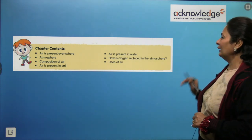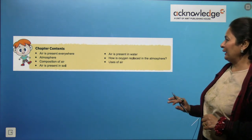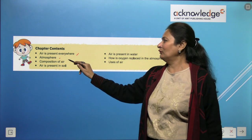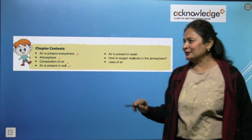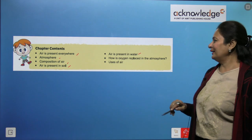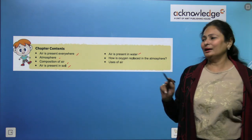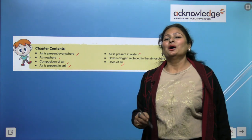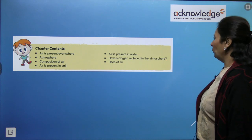Under this chapter we are going to cover the topics: air is present everywhere, what is atmosphere, the composition of air, air present in soil, air present in water, how is oxygen replaced in the atmosphere, and the last topic — uses of air. So let's begin.